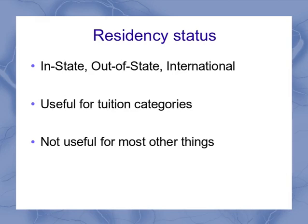Let's look at residency status. That's actually a pretty easy one to implement. Students are either in-state, out-of-state, or international students. This is the way we classify them in the United States, and it's useful for tuition categories, partly based on a rationalization based on taxes paid. Determining the residency status depends on home address, but it really isn't used for anything outside of that tuition classification.